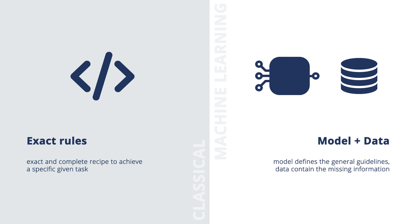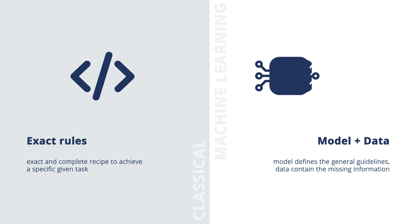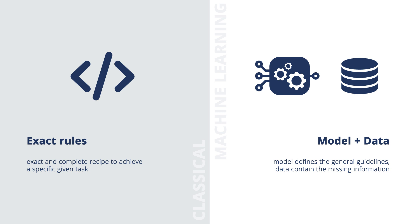Machine learning algorithms, on the other hand, are given general guidelines that define the model, along with data. This data should contain the missing information necessary for the model to complete the task. A machine learning algorithm can accomplish its task when the model has been adjusted with respect to the data — we say that we fit the model on the data, or that the model has to be trained on the data.